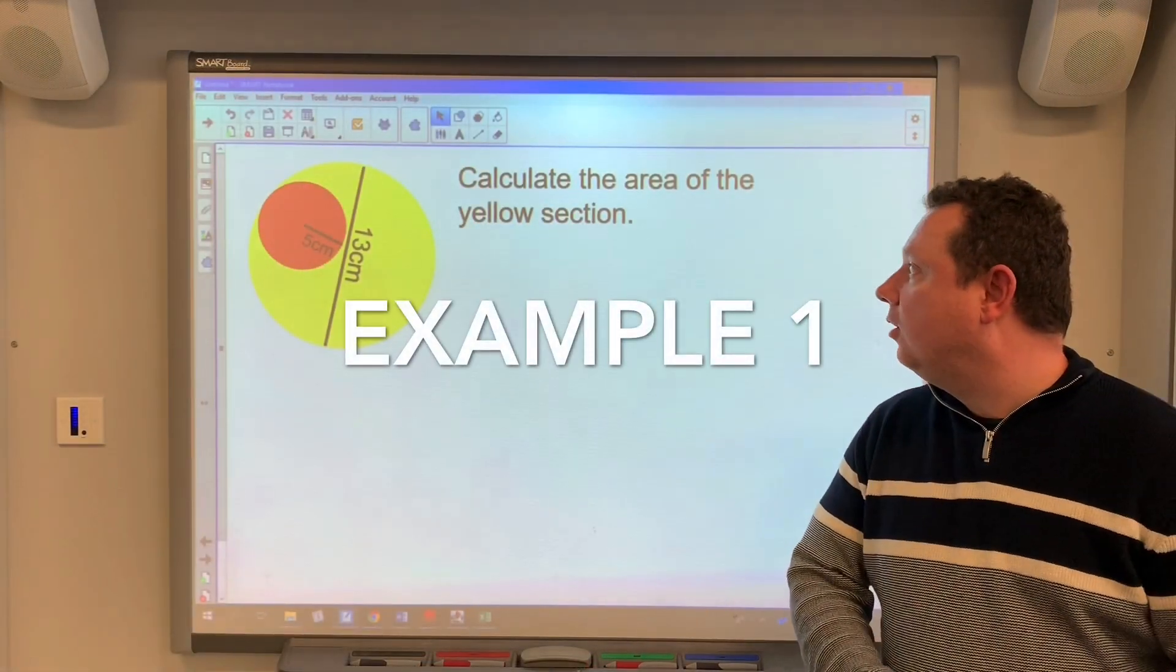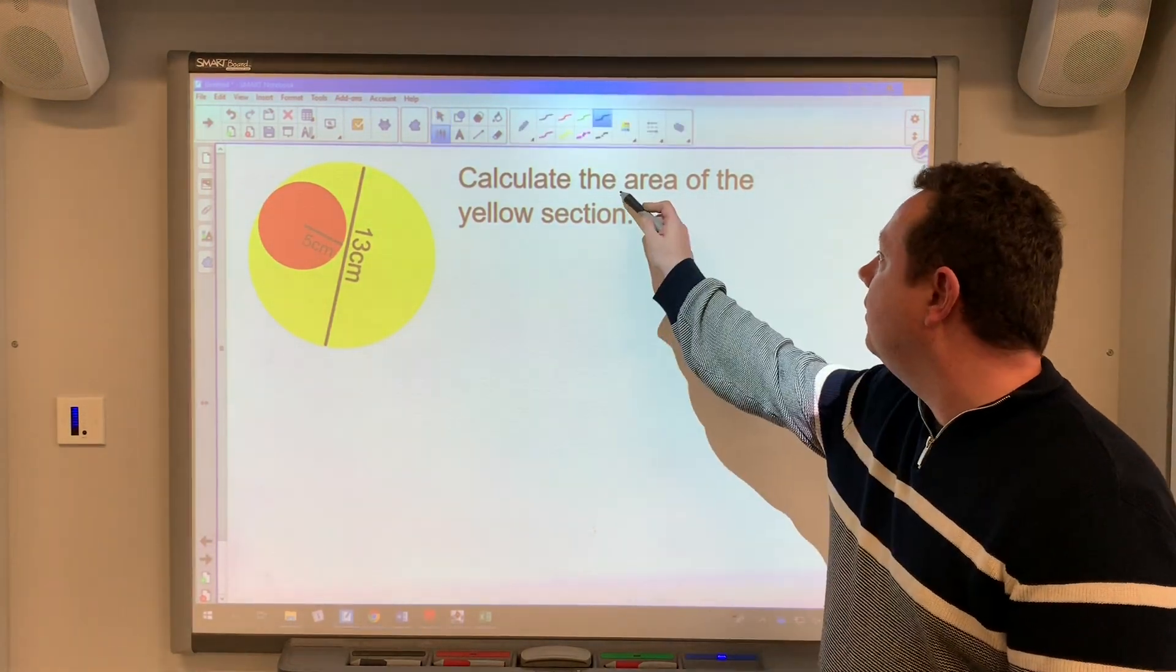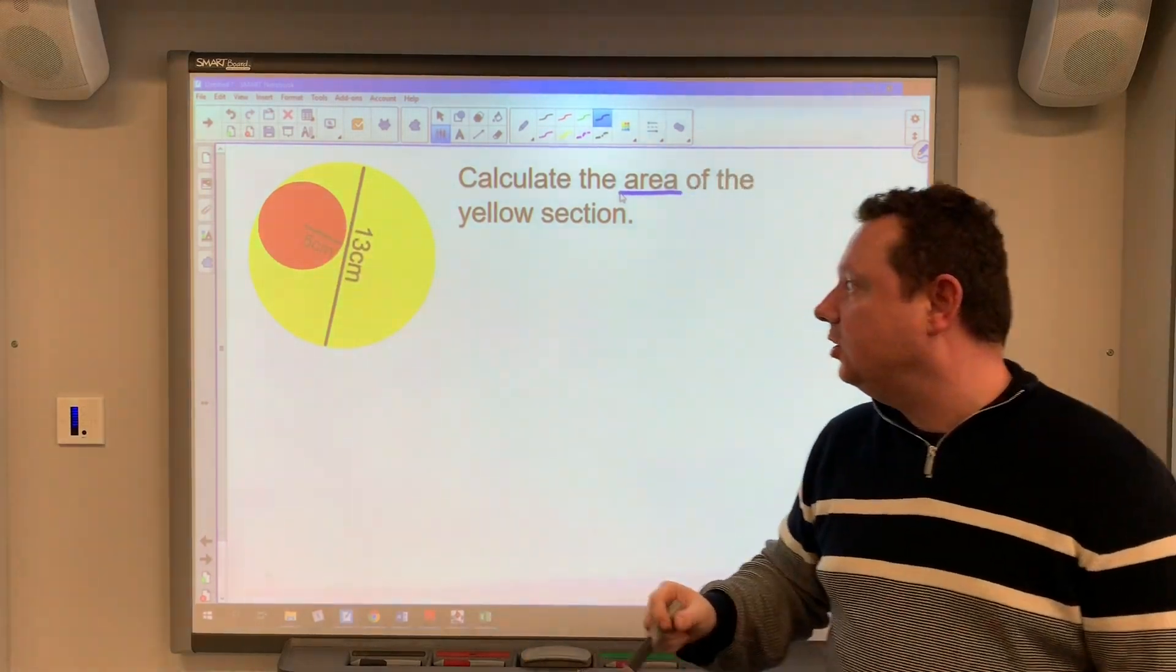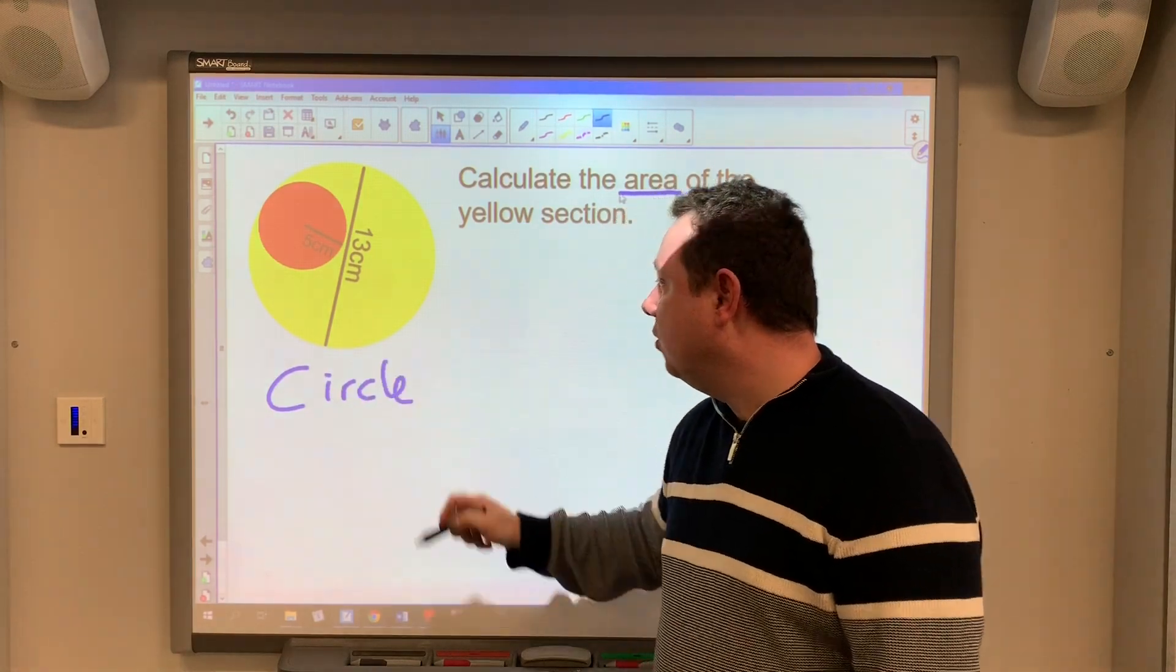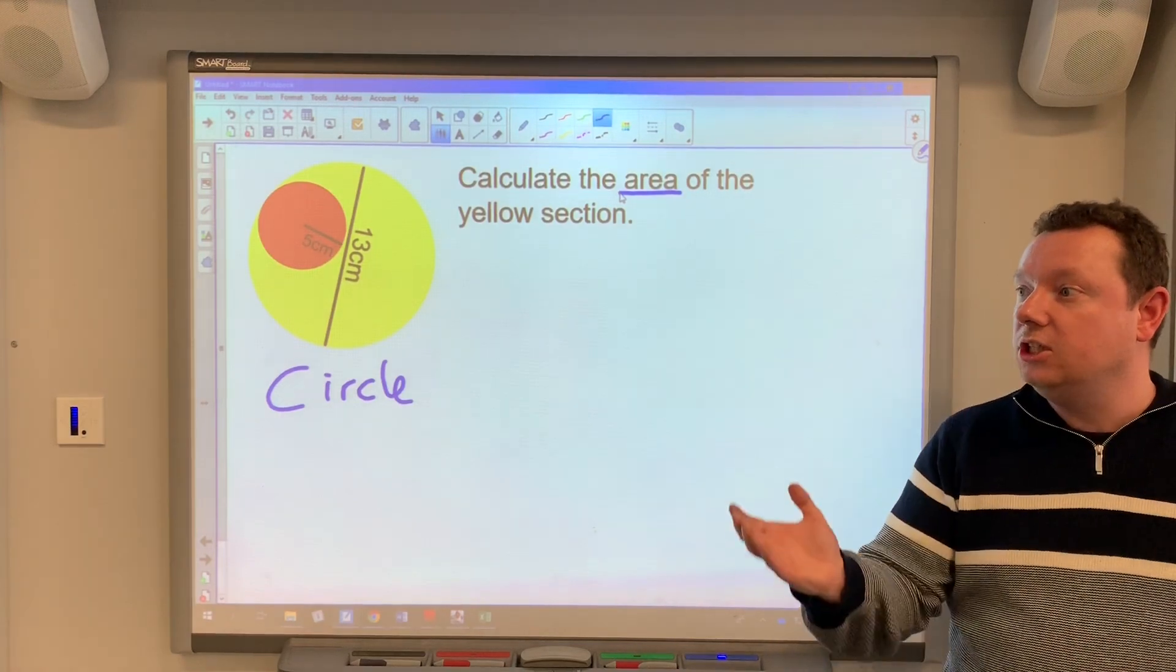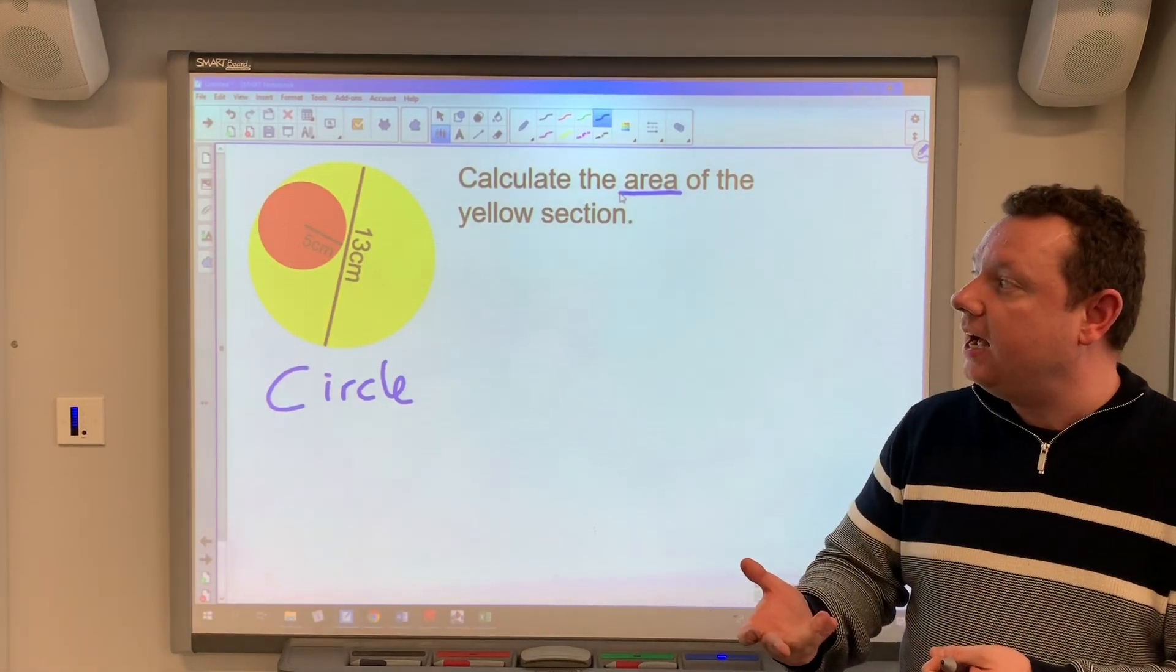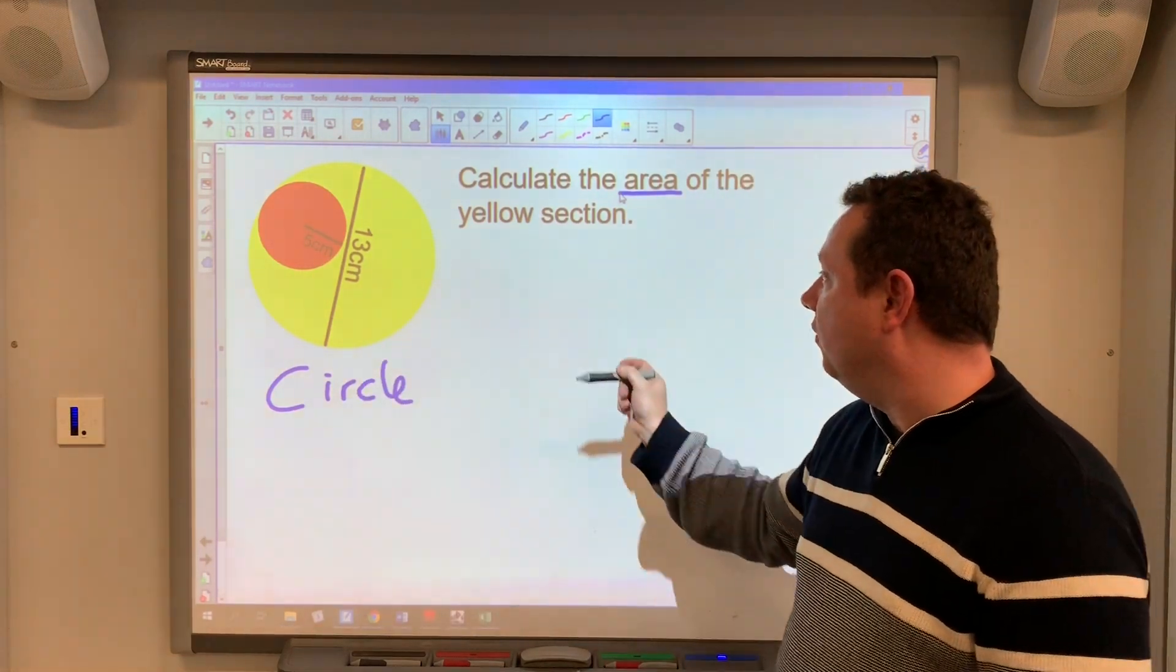Okay, straight in an example. So we're going to calculate the area of the yellow section. So there's a big red section and a yellow section but obviously this is a circle. So I can immediately calculate the area of the large yellow circle and then I can calculate the area of the small red circle and if I took that away from that, the big minus the small, that will leave me with the yellow section. So I'll go ahead and do that.